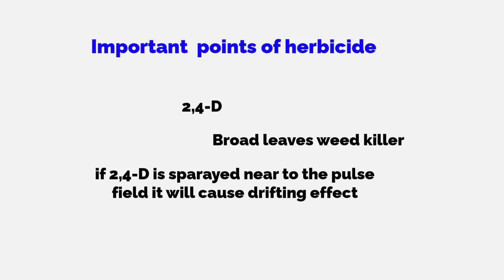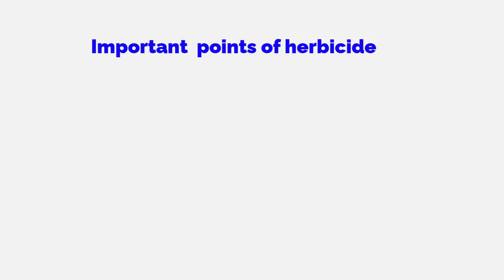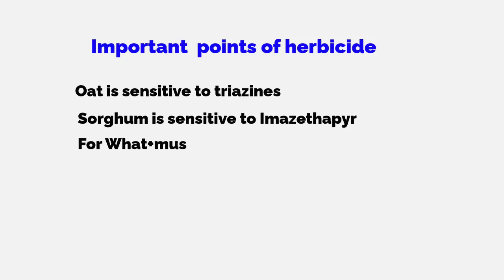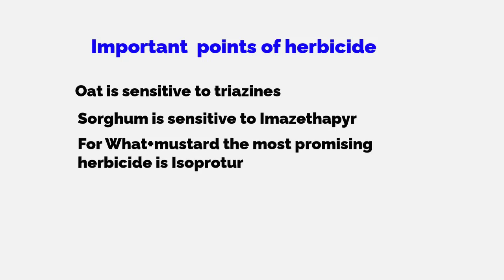2,4-D is a broadleaf weed killer, and if it is sprayed in the vicinity of a field where pulse is grown, it will cause a drifting effect on the pulse. Oat is very sensitive to triazine, and sorghum is very sensitive to imidazolinone (imazapyr). Wheat and mustard represent the most promising intercropping system, and the best herbicide to use in this case is isoproturon, which can be applied even when growing wheat with mustard.